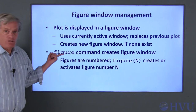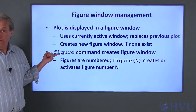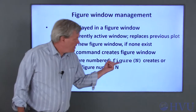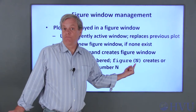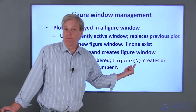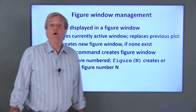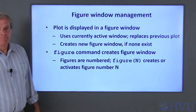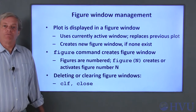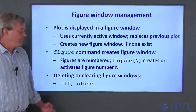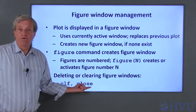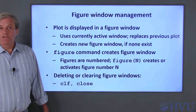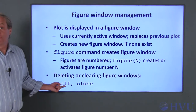The command 'figure' by itself creates a new figure window. Each figure window has a number. The command figure(n) creates a figure with that number if it doesn't already exist, or activates an already existing figure with that number. You can remove the contents of a figure window or delete the window itself with the CLF and close commands. To remove the plot from the active figure window, type CLF and press enter.